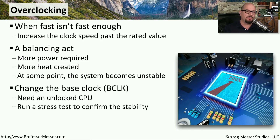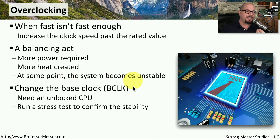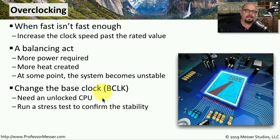Not all motherboards allow you to change the clock speeds, but if your motherboard does, there's probably a setting in your BIOS called Base Clock or BCLK. This also requires that the CPU you're using allows you to increase the clock speed — not all CPUs are unlocked. So you have to make sure not only that you have the right motherboard, but that you're using a CPU that can support overclocking. Once you've increased the clock, you can perform a series of stability tests and run tests overnight to see how stable your computer is at this higher speed.